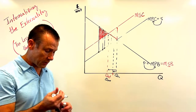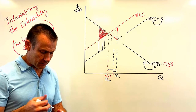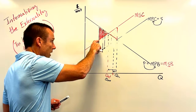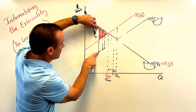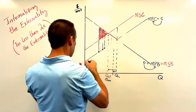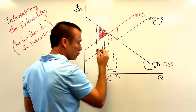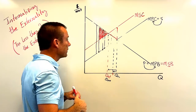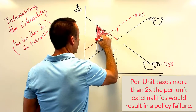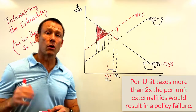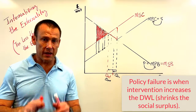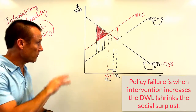You can probably see where this is going. If that tax was bigger than 2x — something like 2.3 times the negative externality — the deadweight loss is now definitely bigger than it used to be. So when are you going to do more harm than good? If you make the per unit tax more than 2x the per unit externality.